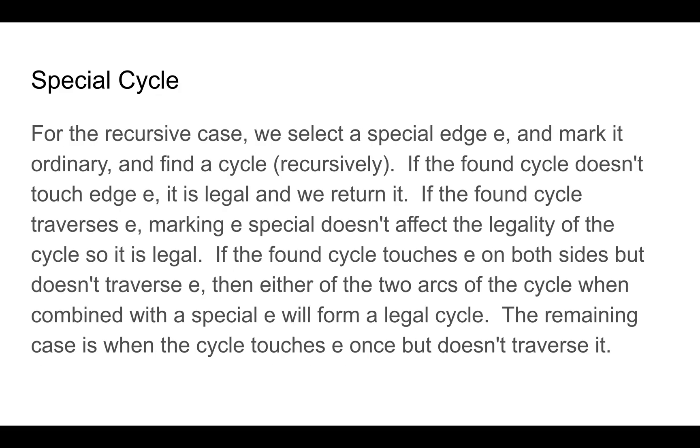For the recursive case, we pick any special edge, we call it e, and we mark it ordinary and we find a cycle recursively, a legal cycle. If the found cycle doesn't ever touch e, then it's a legal cycle, we return it, we're done.